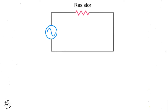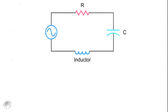Circuits that contain resistors, capacitors, and inductors, either in series or parallel, are known simply as RCL circuits. Specific equations can be used to determine the values of resistance, impedance, current, and voltage in RCL circuits.